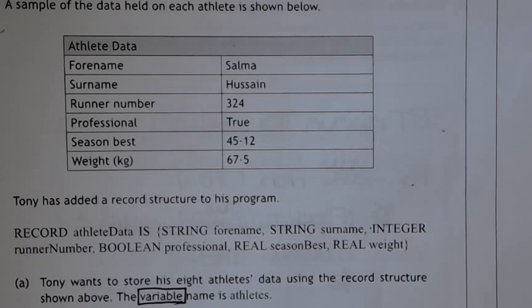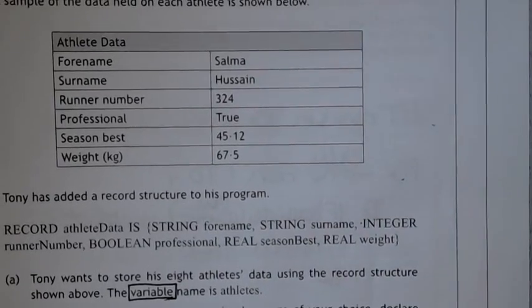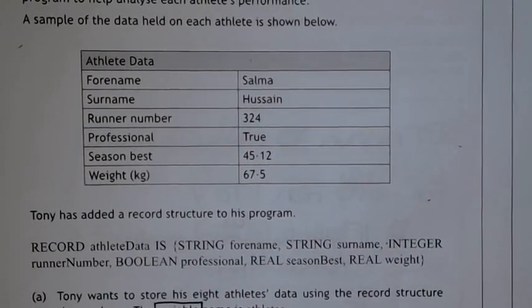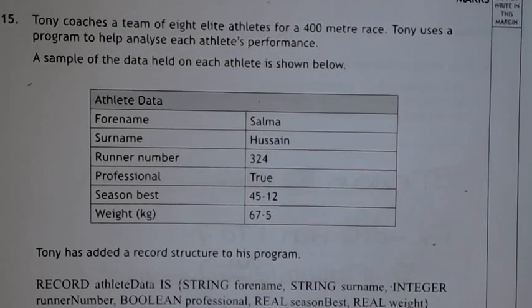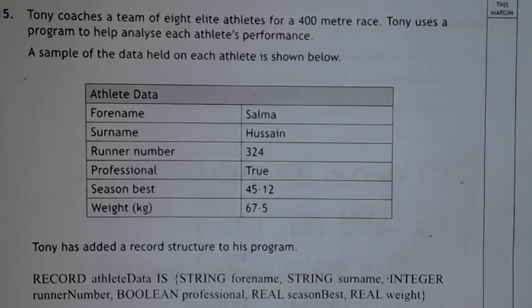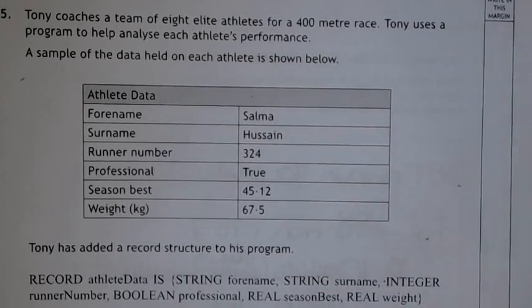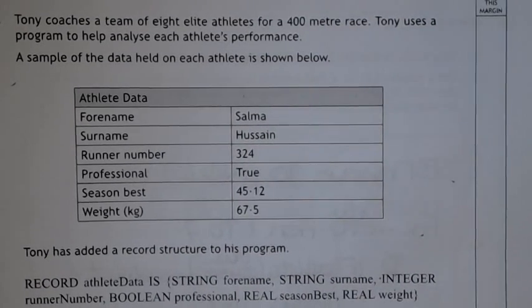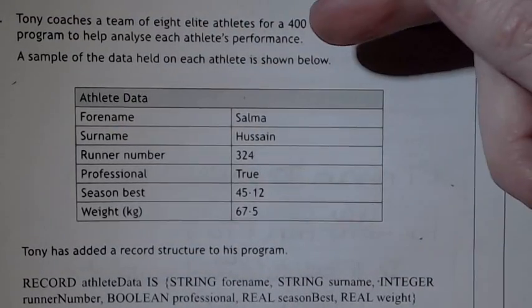Hey, so this is new to you if you did National 5 and you're doing Higher. What we've got here is something called a record. You're used to records in databases — records had fields, separate bits of information. In terms of the programming aspect, we've got an example where they want to store information about a certain topic. In this case, it's about athletes.